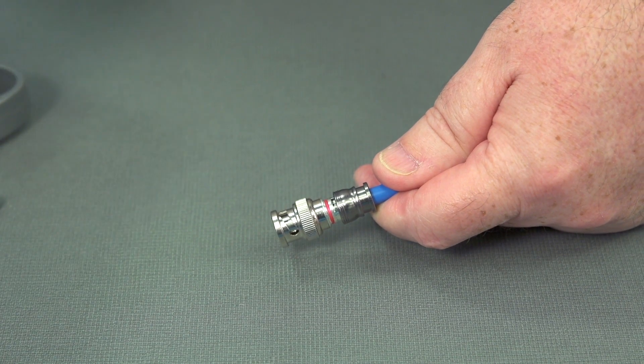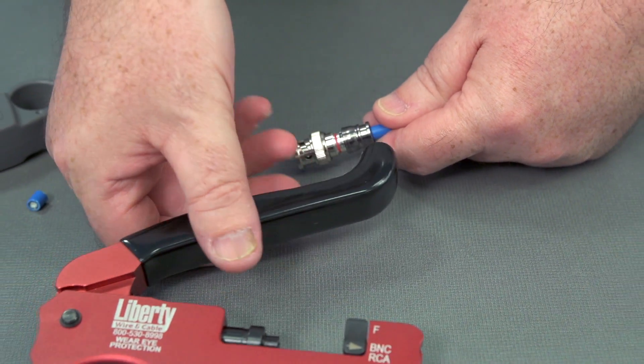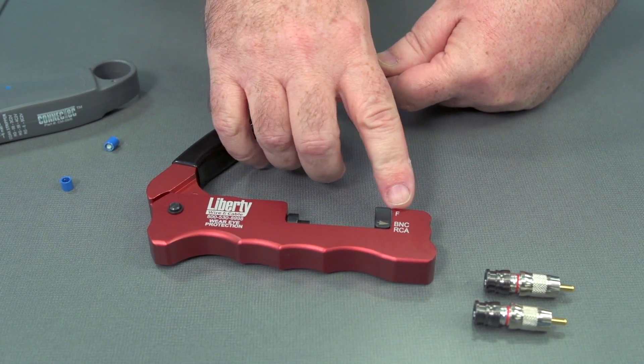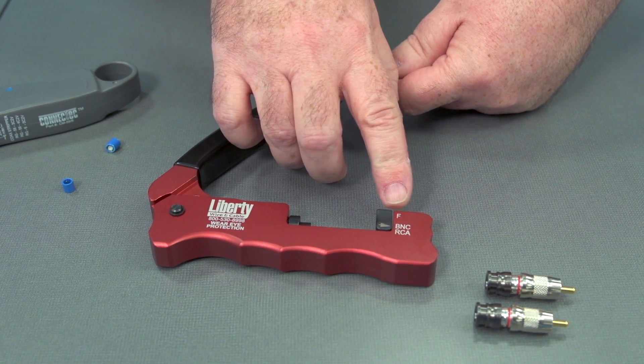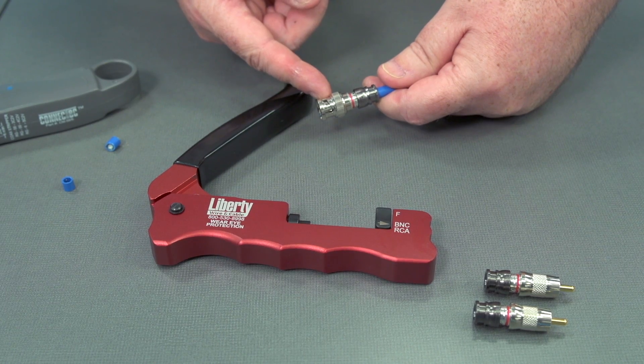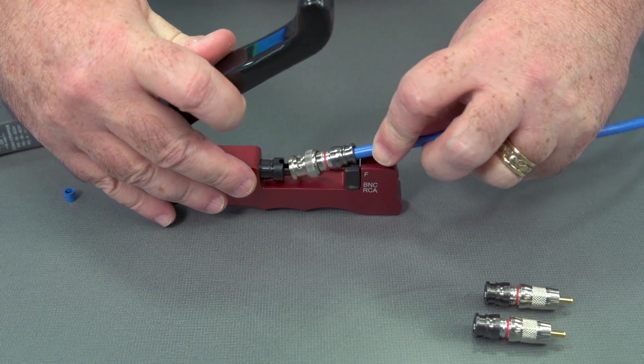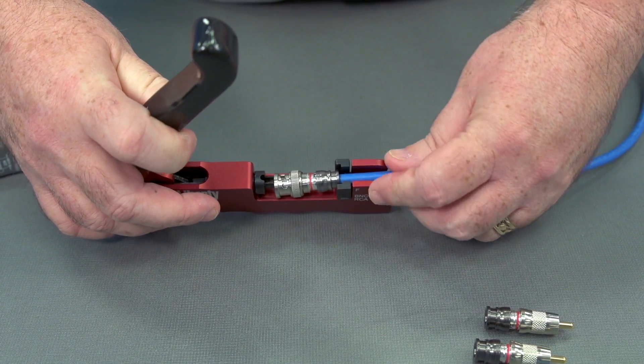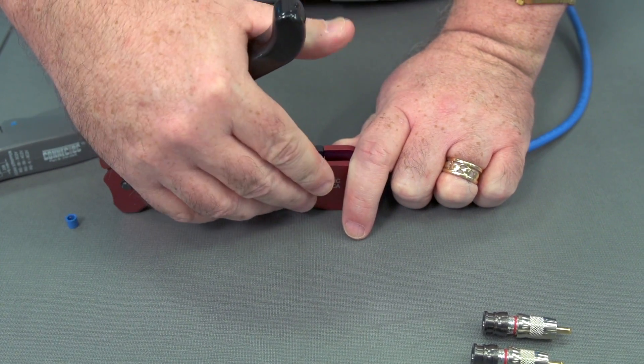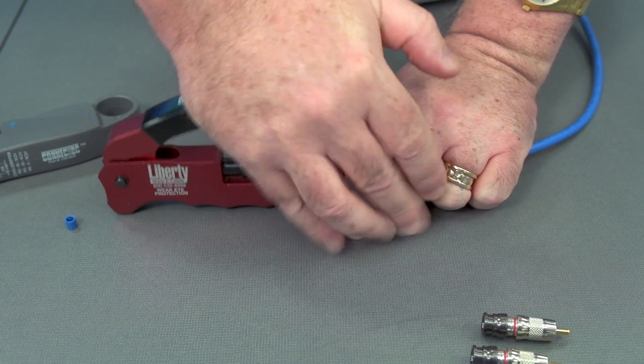The next step in compression fittings is the tool. So this is a compression tool, and you can see that there's some markings on this particular tool. We need to make sure that it's set for BNC since we're making a BNC connector. We'll fit the connector into the tool. Push down on the lever and compress the fitting together.